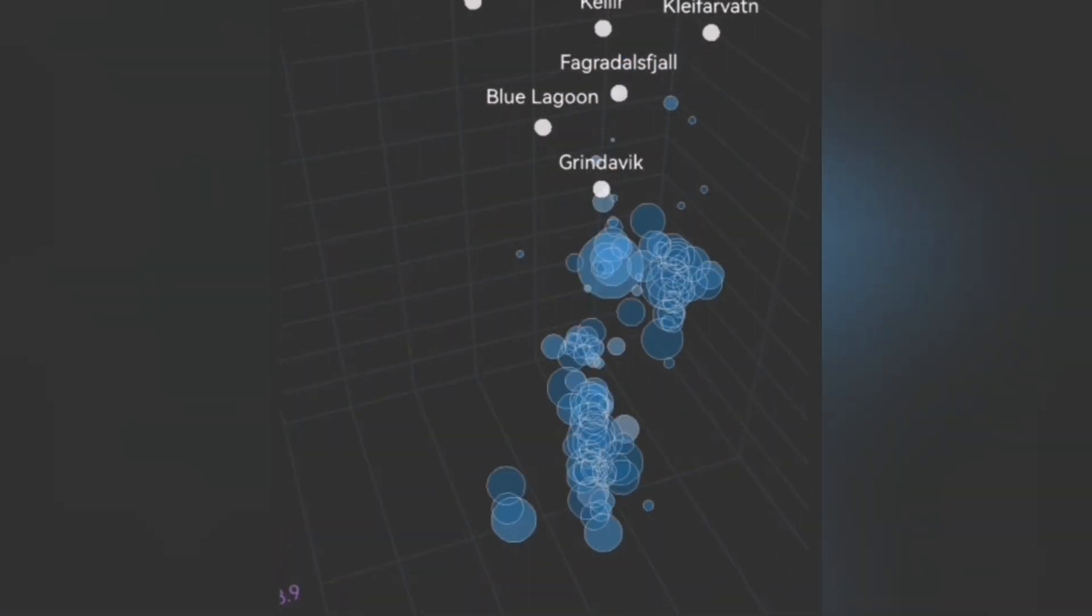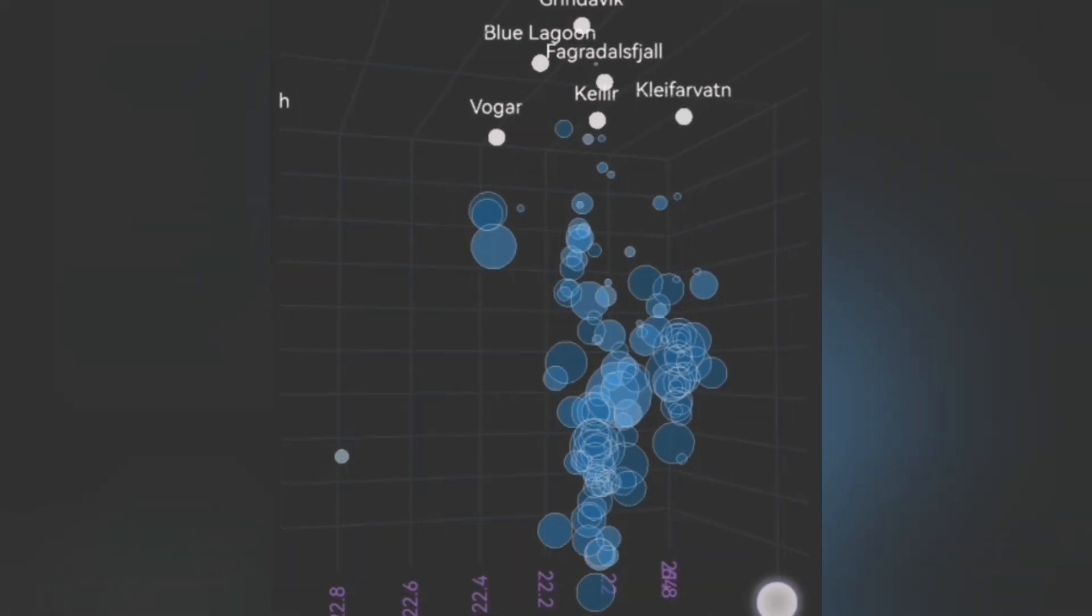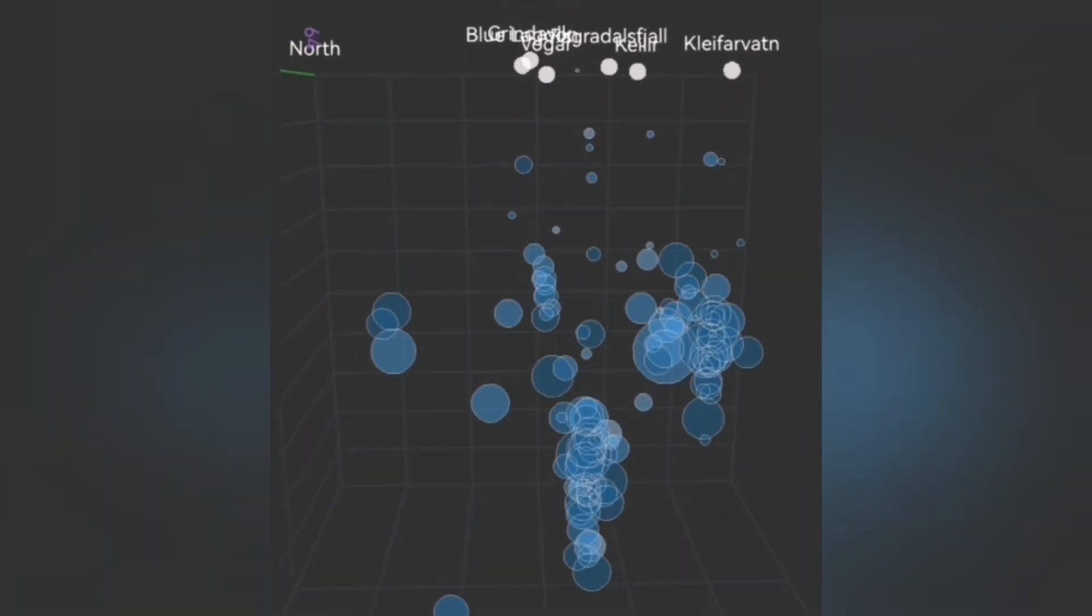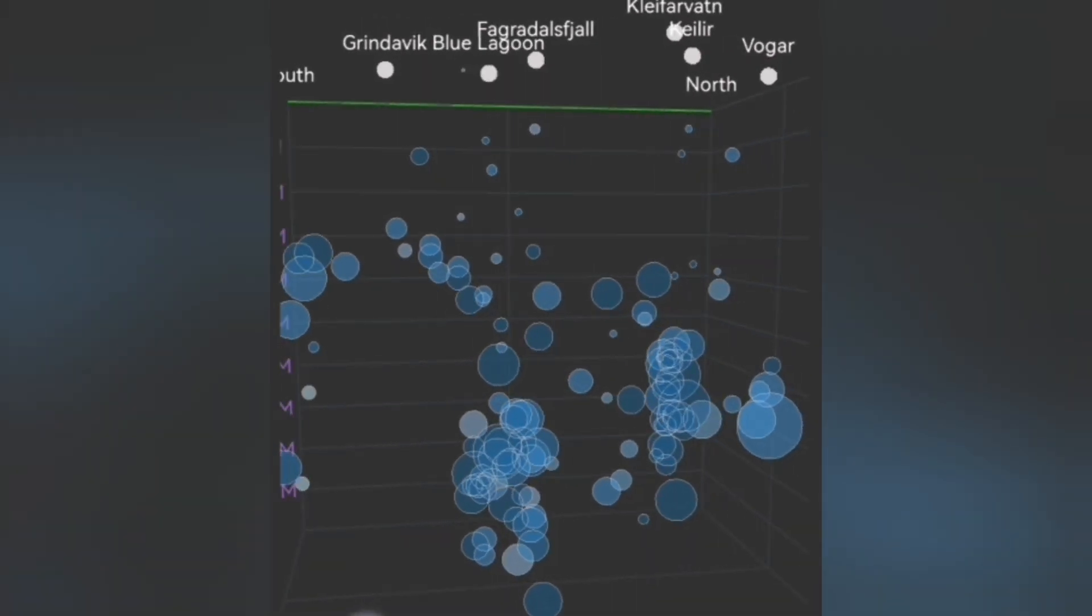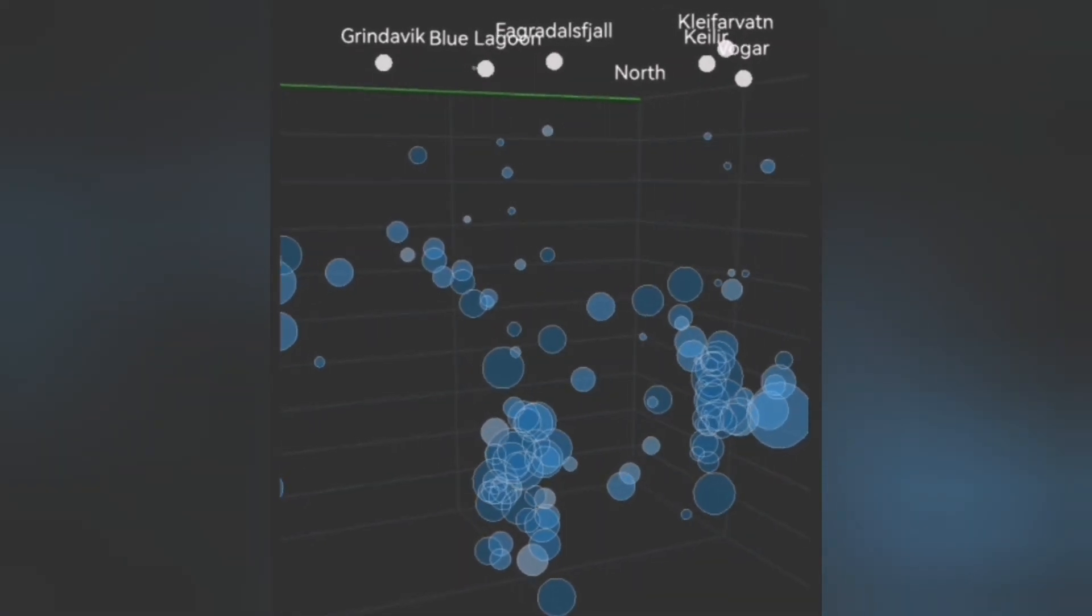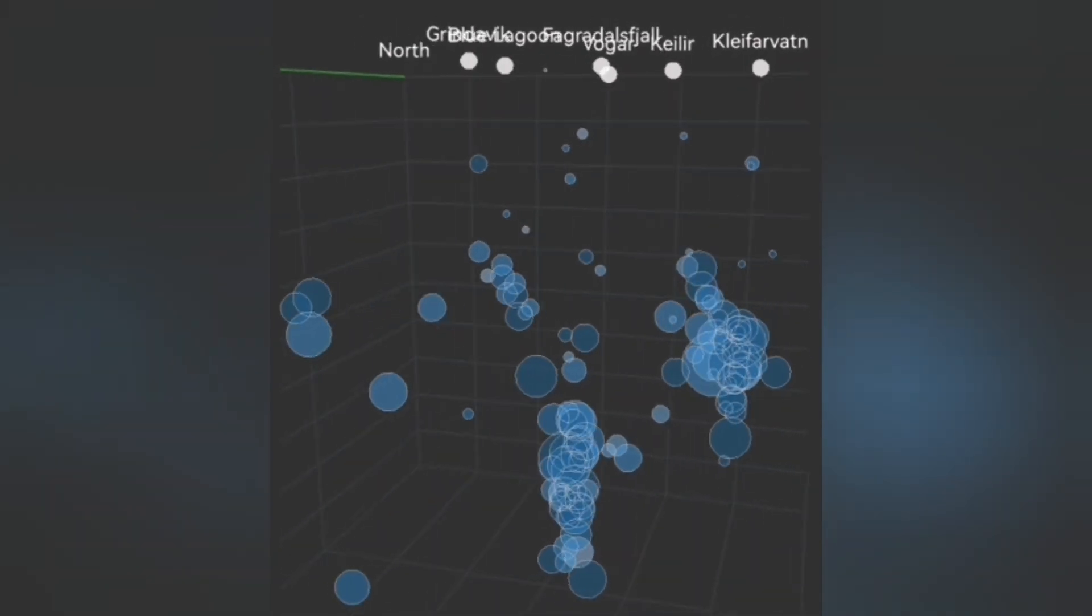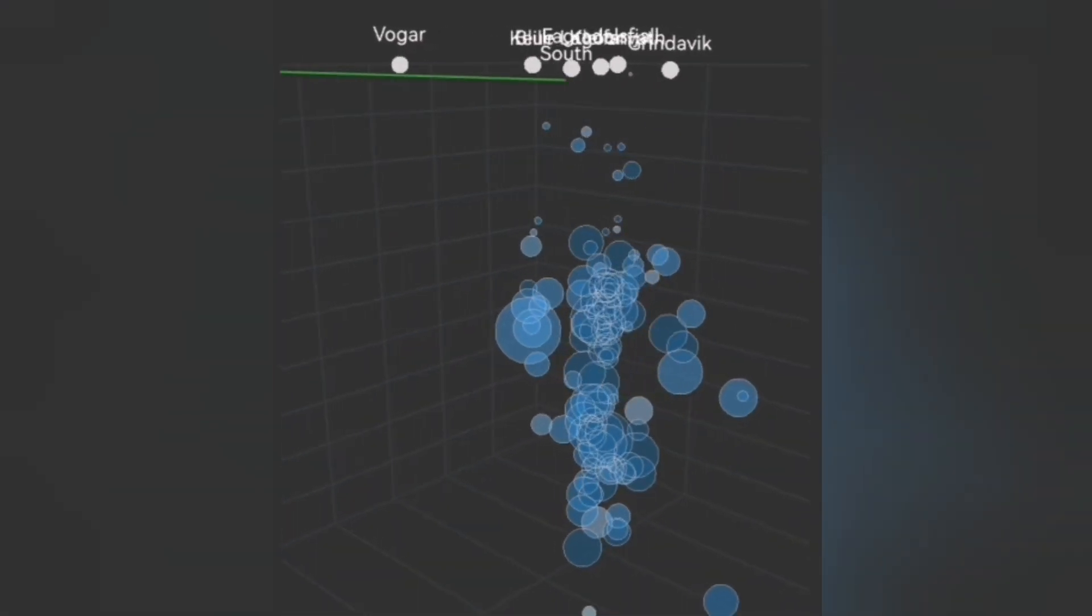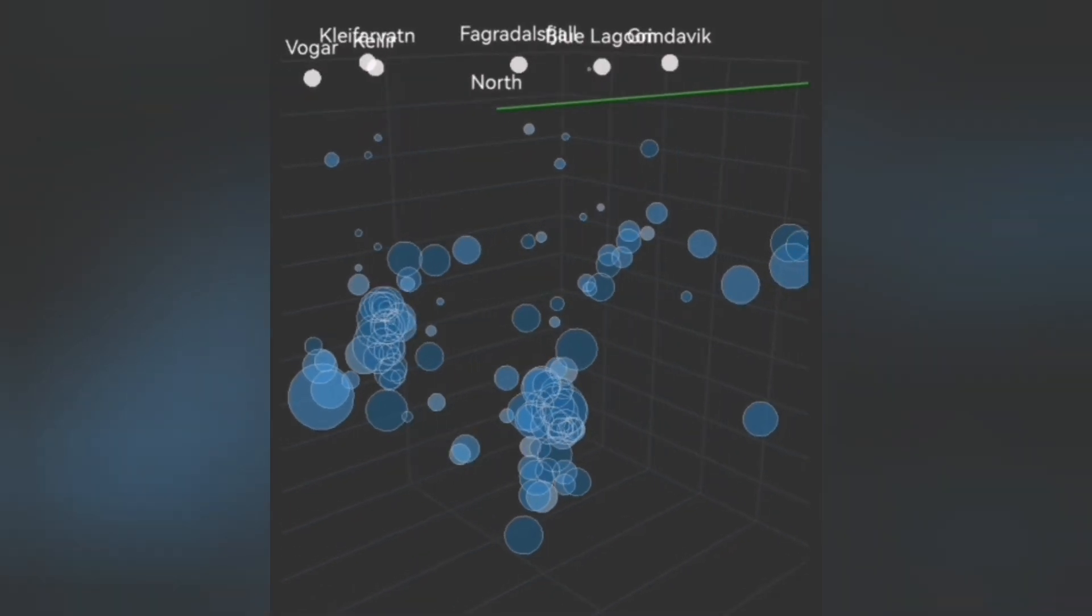For example, when I look at the earthquake depth chart, you can see a tongue of earthquakes at an angle moving from what is practically under Svartsengi toward Grindavik. We call it a transgressive sill in geological terms, a sill which has an angle and just rises gradually, but not vertically.